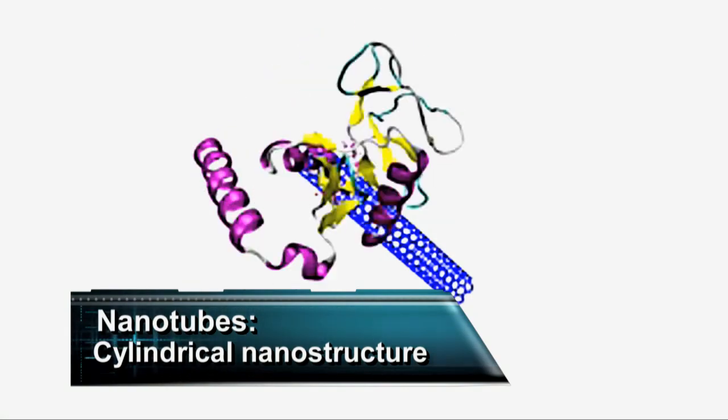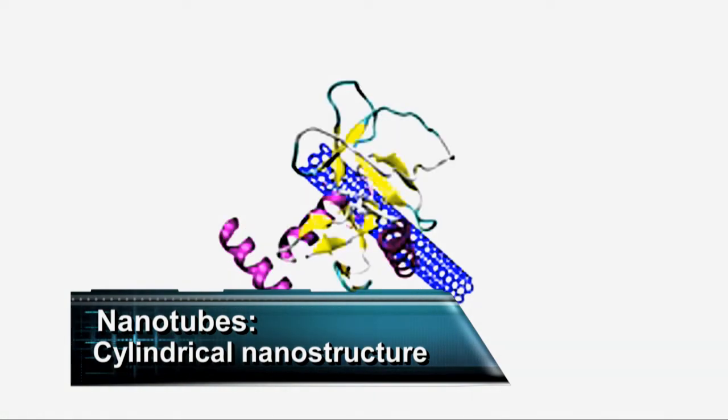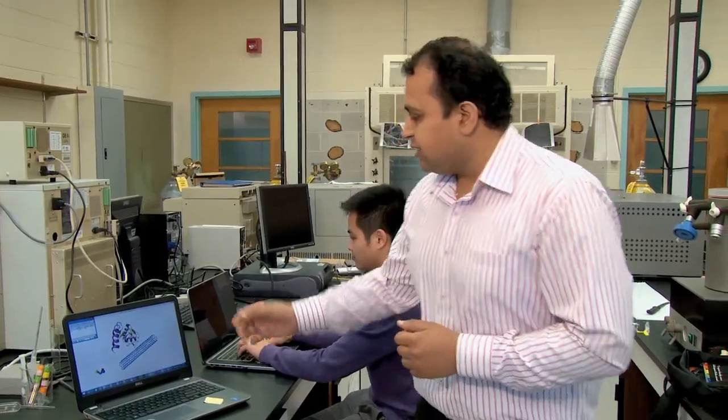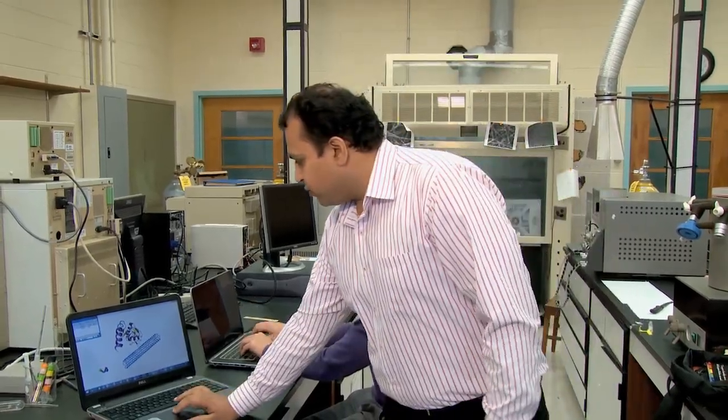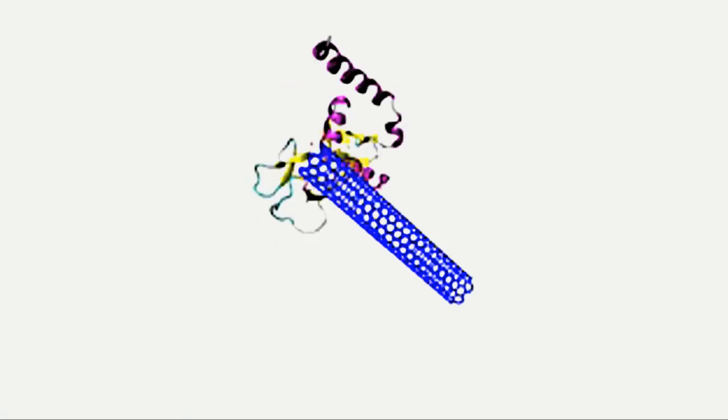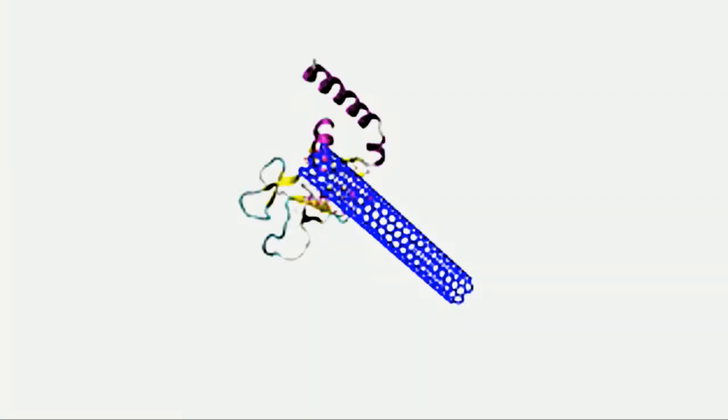Now to develop any nanosensors first we have to see that the biomaterial or the protein which we are targeting is compatible with the nanomaterial or the nanotube. To do that we have to do very high scale computing. Well here is an example to demonstrate how this protein is interacting with the carbon nanotube.